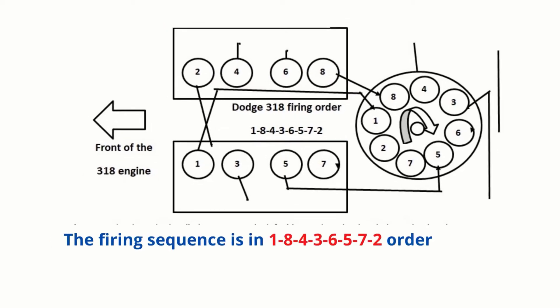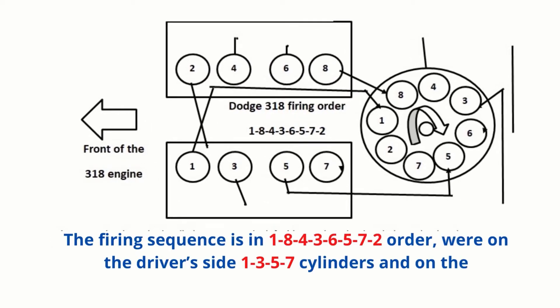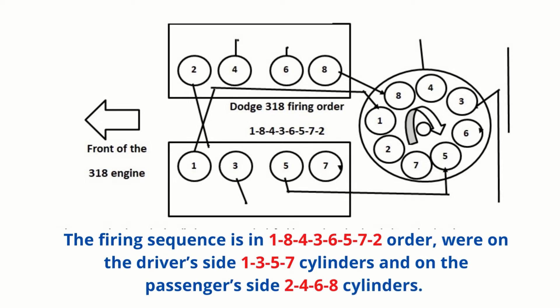The firing sequences in 1, 8, 4, 3, 6, 5, 7, 2 order were on the driver's side 1, 3, 5, 7 cylinders and on the passenger's side 2, 4, 6, 8 cylinders.